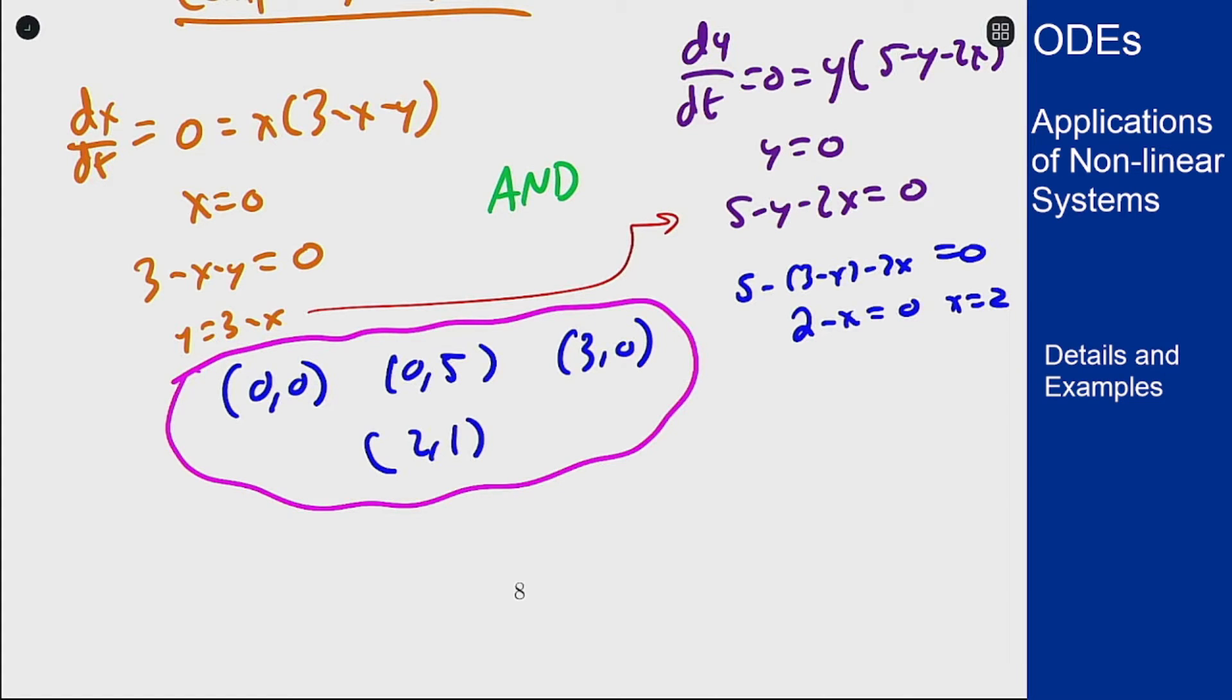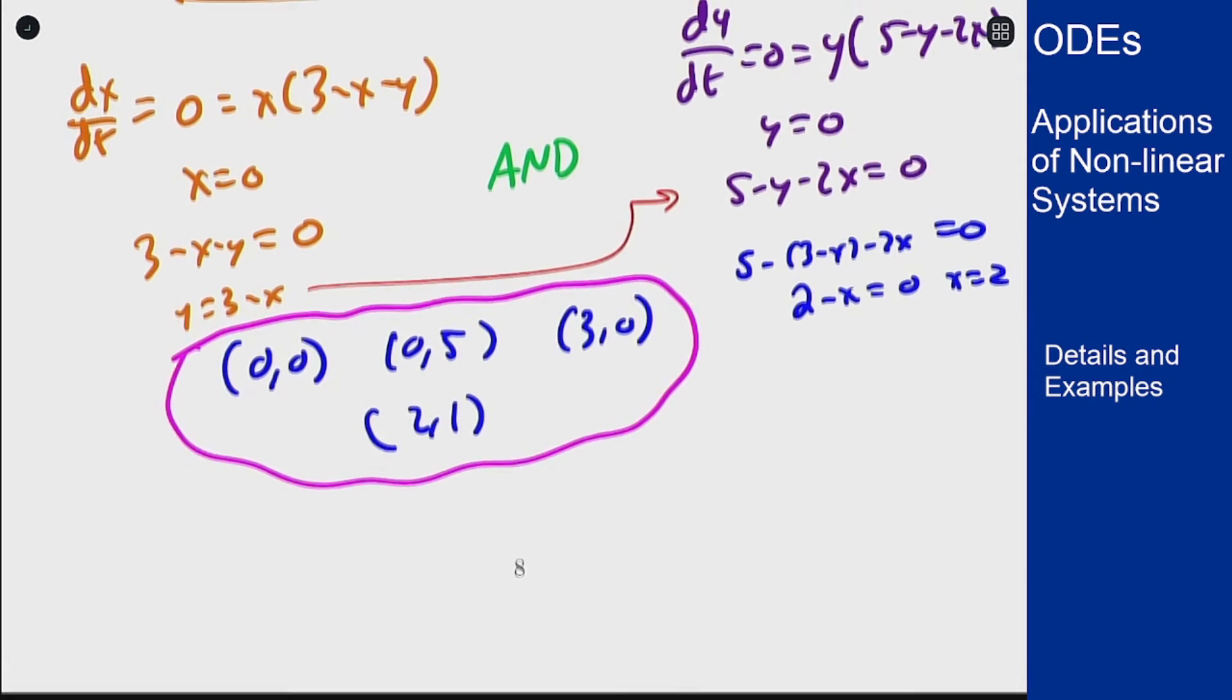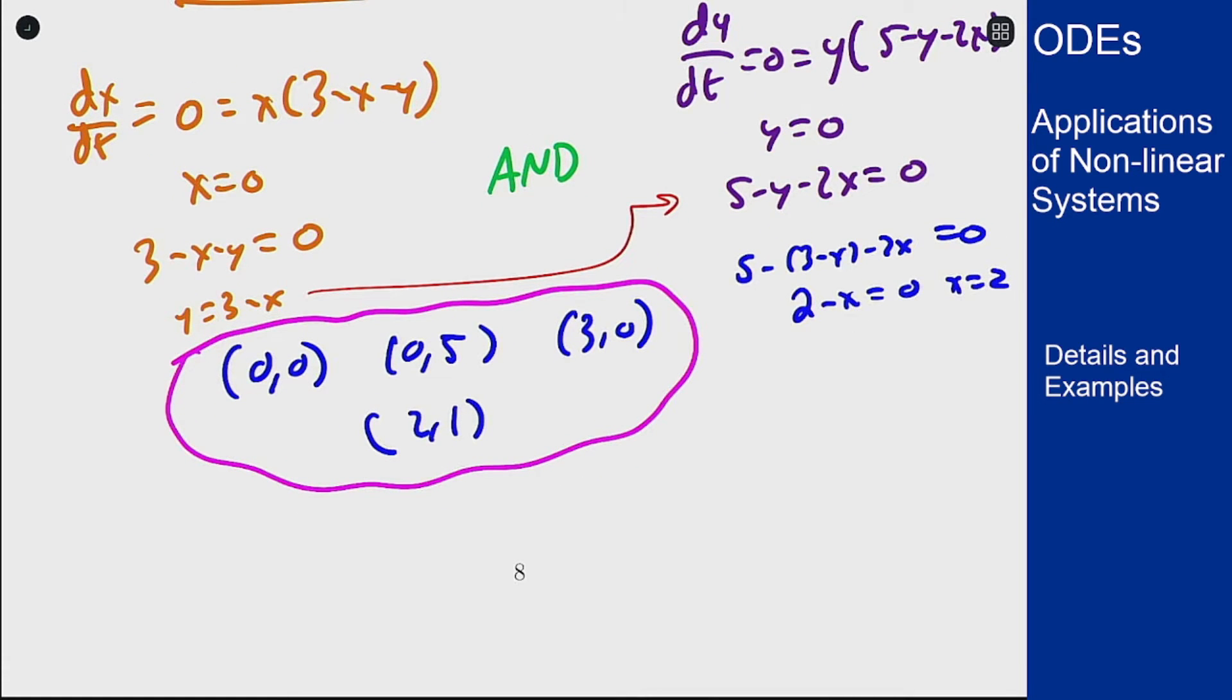Now I want to classify them using the Jacobian matrix. So we have f and g written right here above. Here's f and here is g. So then we can write the Jacobian as partial f partial x is 3 minus x minus y minus x, df/dy is minus x, dg/dx is minus 2y